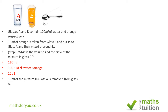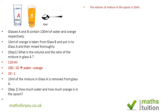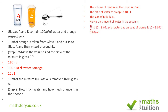Step 2: we now take out 10 mils of the mixture from glass A and find out how much water and how much orange is in that spoon. The ratio of water to orange is still 10 to 1, and the sum of the ratio parts is 11. So the amount of water in the 10ml spoon is 10/11 × 10 = 9.091 mils of water, and the amount of orange is 0.909 mils.